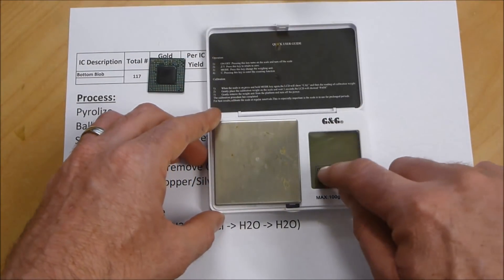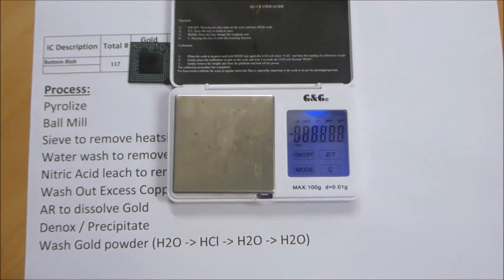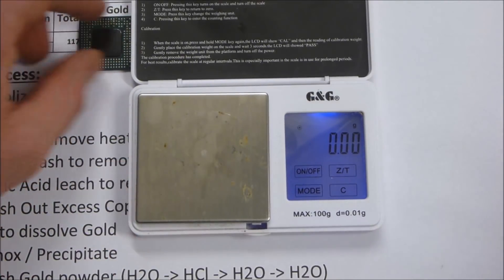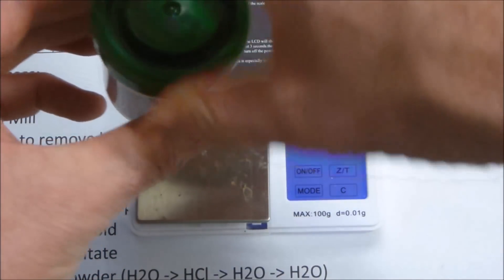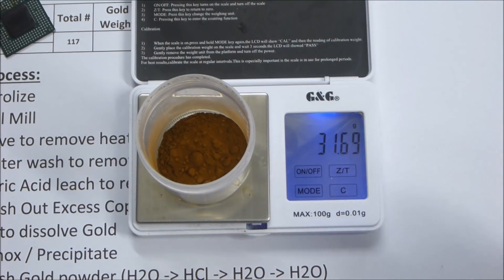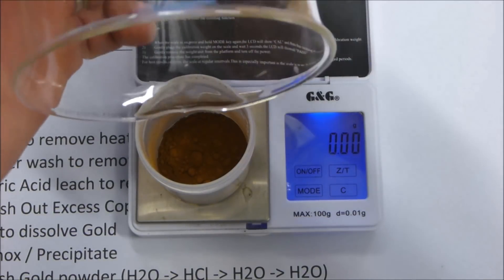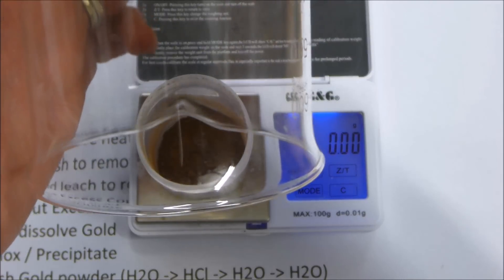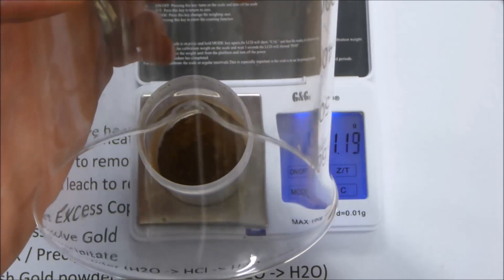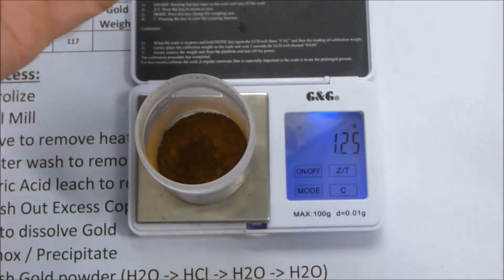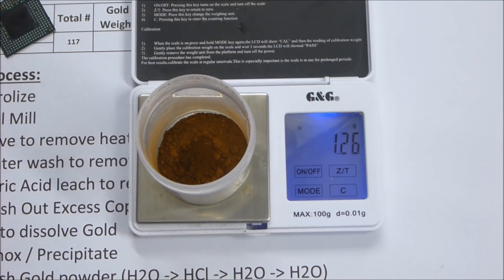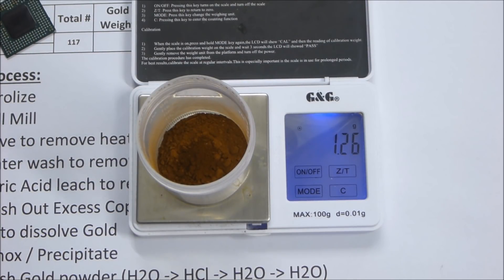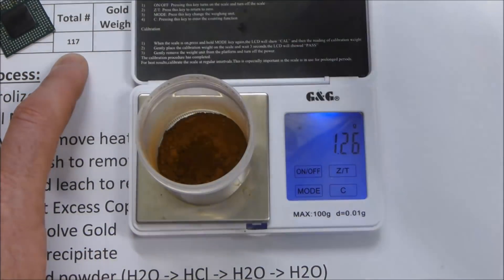We end up with a very reasonable amount of powder considering I only worked with 117 of these ICs. Let's get the scale going. I haven't weighed this up at all. I'm going to make a prediction which says more than one gram, less than two grams, which would be quite good. Let's see what we've got. We're just going to zero off everything that's in there. Okay, there we go. 1.26 grams from 117 of those ICs.